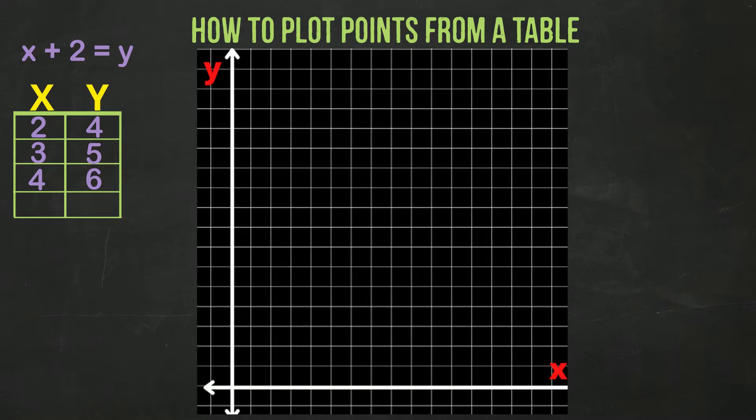Our first set of coordinates are 2 and 4. We move to the right two spaces and then up 4. We plot that point here.